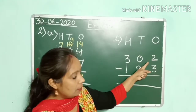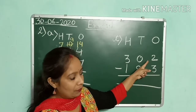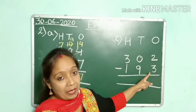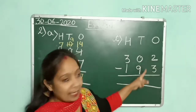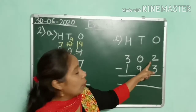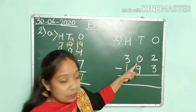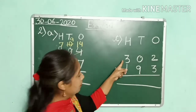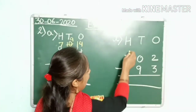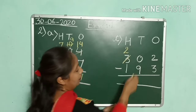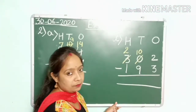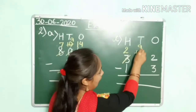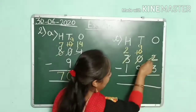We will start subtraction from the 1s column. You have to subtract 2 and 3, but we cannot subtract 3 from 2 as 2 is smaller than 3. So 2 will borrow from 0. Again, this is 0, so 0 will borrow from 3. So 3 becomes 2 and this 0 will become 10. Now this 2 will borrow from this 10, so 10 becomes 9 and this 2 becomes 12.